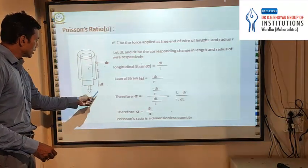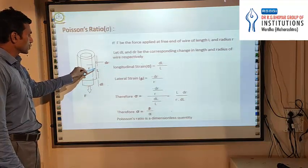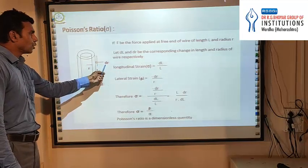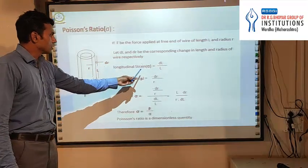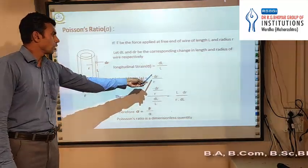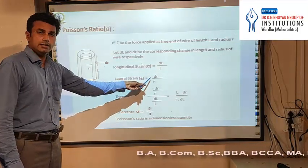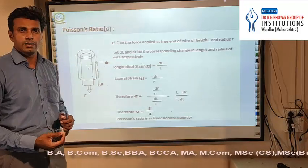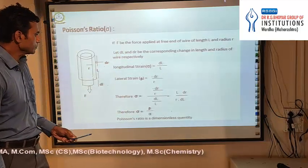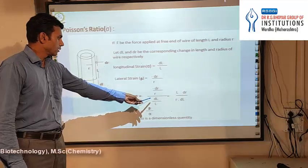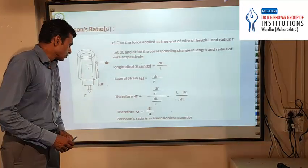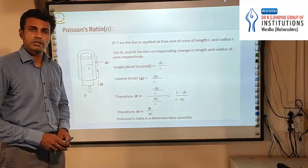The change in length is delta L and the original length is capital L. The original radius of the wire is R and the change in radius is dr. The longitudinal strain is delta L by L. The lateral strain is minus dr by r — we take the negative sign because as the length increases the radius of the wire decreases. Therefore, sigma equals minus dr by r divided by delta L by L, which gives sigma equals dr times L divided by delta L times r. The Poisson ratio is a dimensionless quantity.